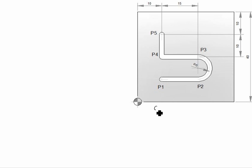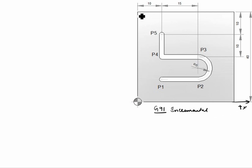Next we will see G91, which is the incremental command. The X goes this side, Y goes this side, and the starting point is here. Now we will write the X and Y values for the G91 command.